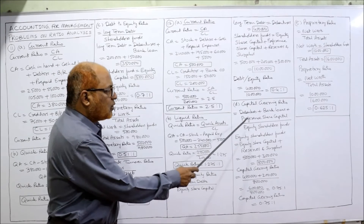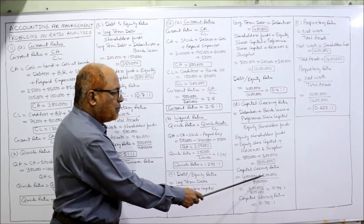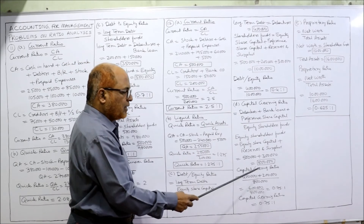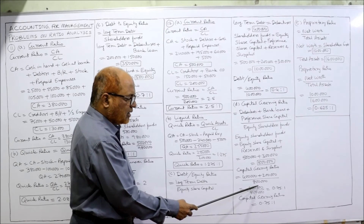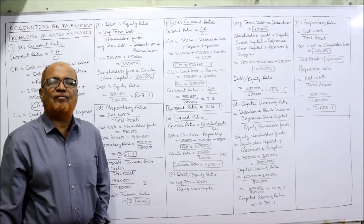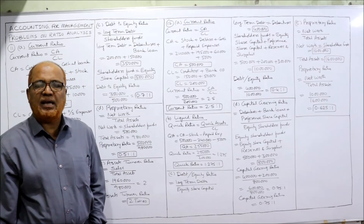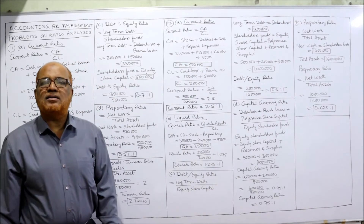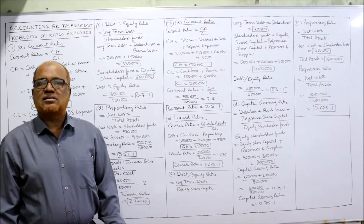In the numerator: debentures are 4 lakh rupees and preference share capital is 2 lakh rupees — bank loan we don't have — so numerator is 6 lakh. Equity shareholders fund: equity share capital 5 lakh plus reserves and surplus 3 lakh equals 8 lakh. Capital gearing ratio: 6 lakh divided by 8 lakh equals 0.75 is to 1. That is the capital gearing ratio.